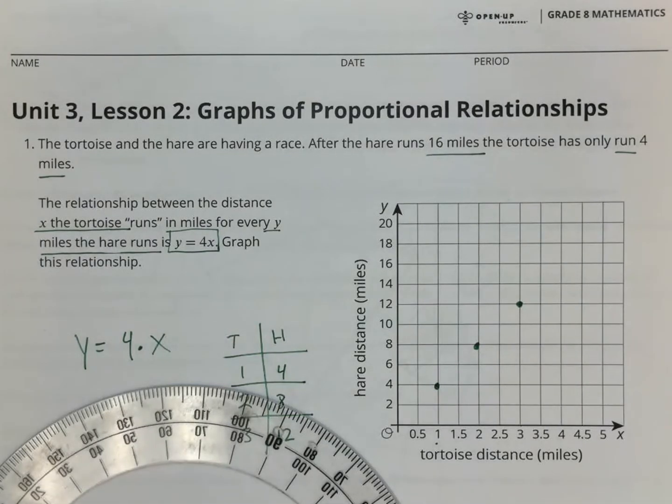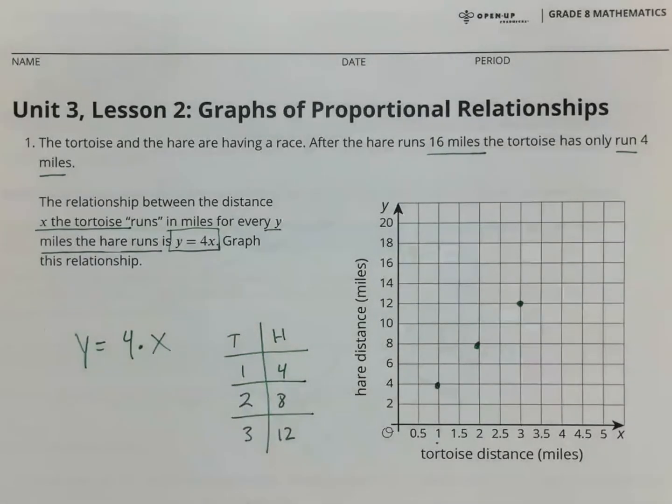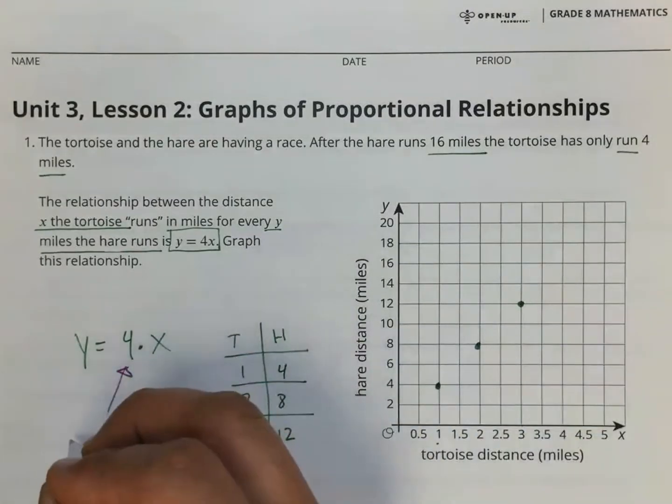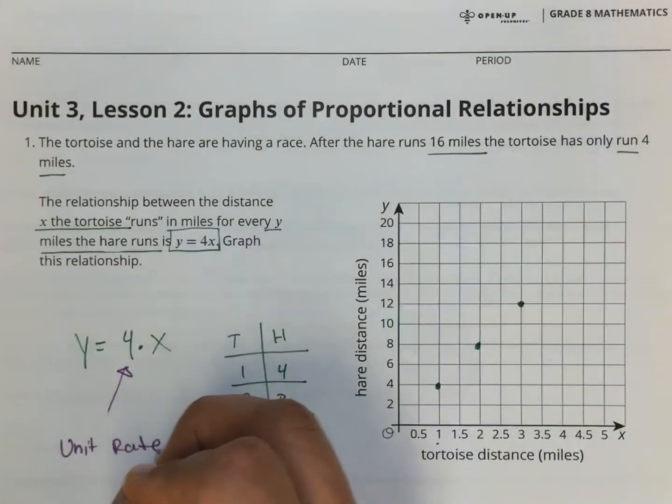Another way to look at the equation is to notice this number right here, the four in our equation. This is the unit rate.